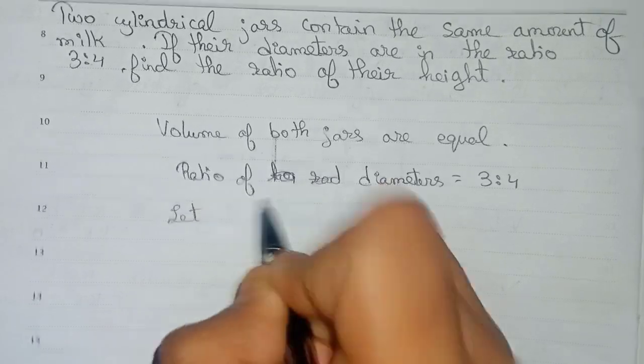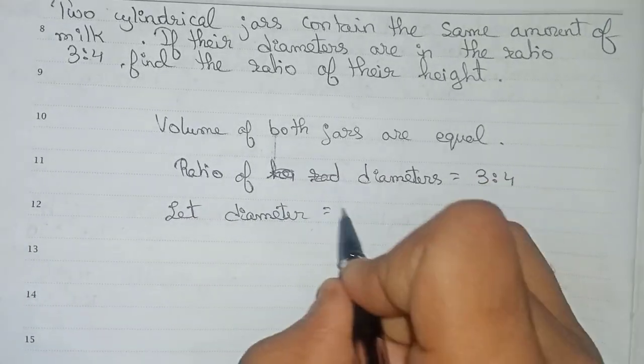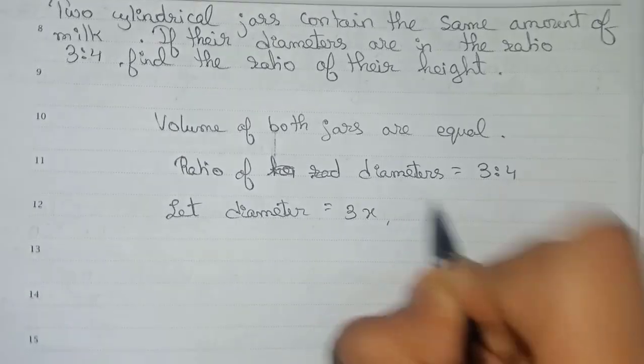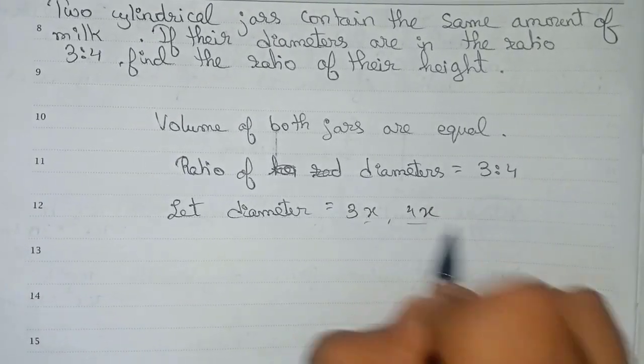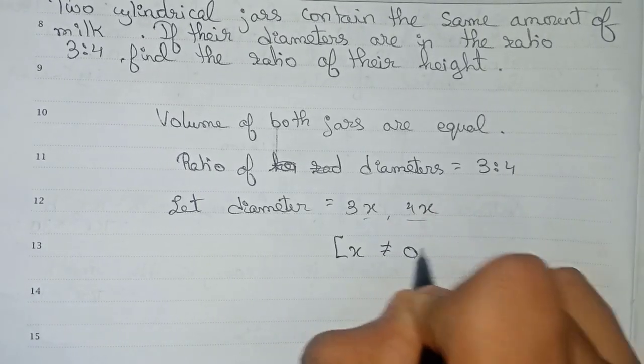So you can write: let diameter is equal to 3x, 4x. We need to take this x and write in bracket x is not equal to 0.